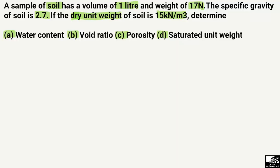We need to determine the water content, the void ratio, the porosity, and the saturated unit weight. To find these parameters, we look at the methods for finding each unknown quantity. Let's start by writing out the given data for this soil sample.